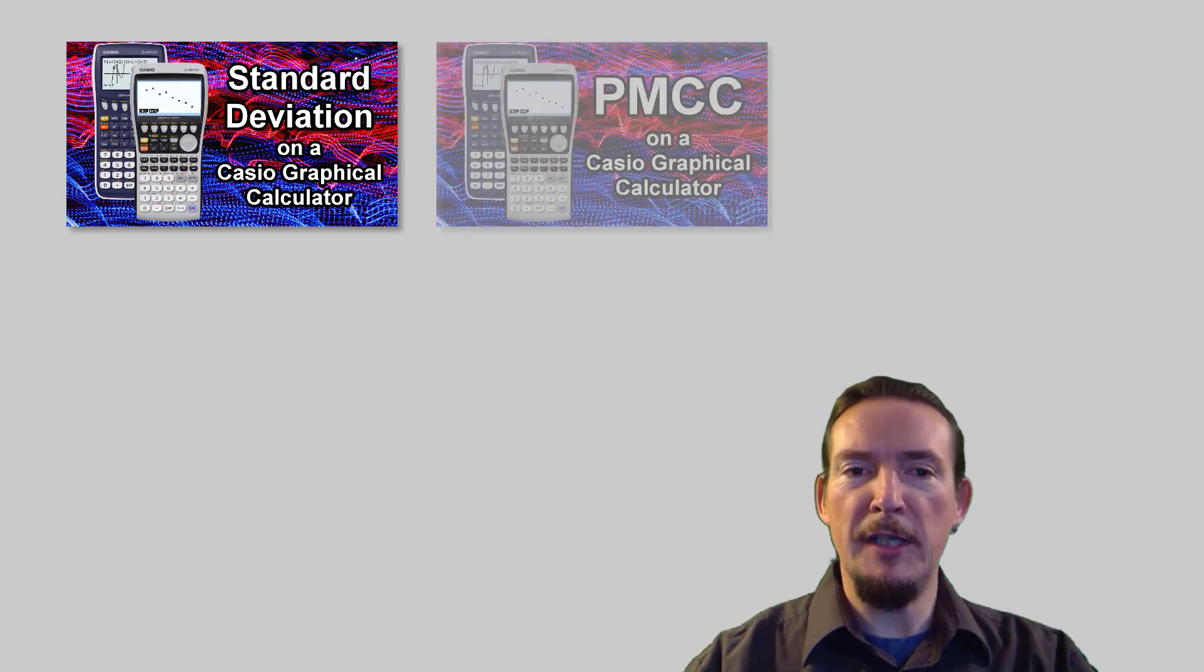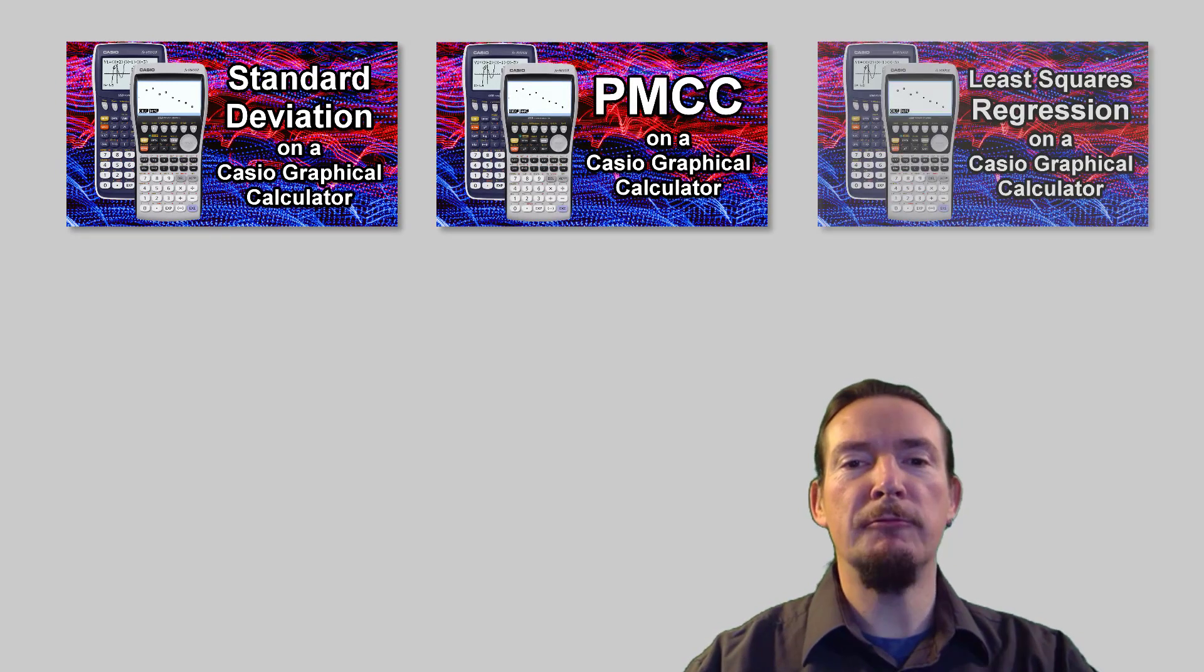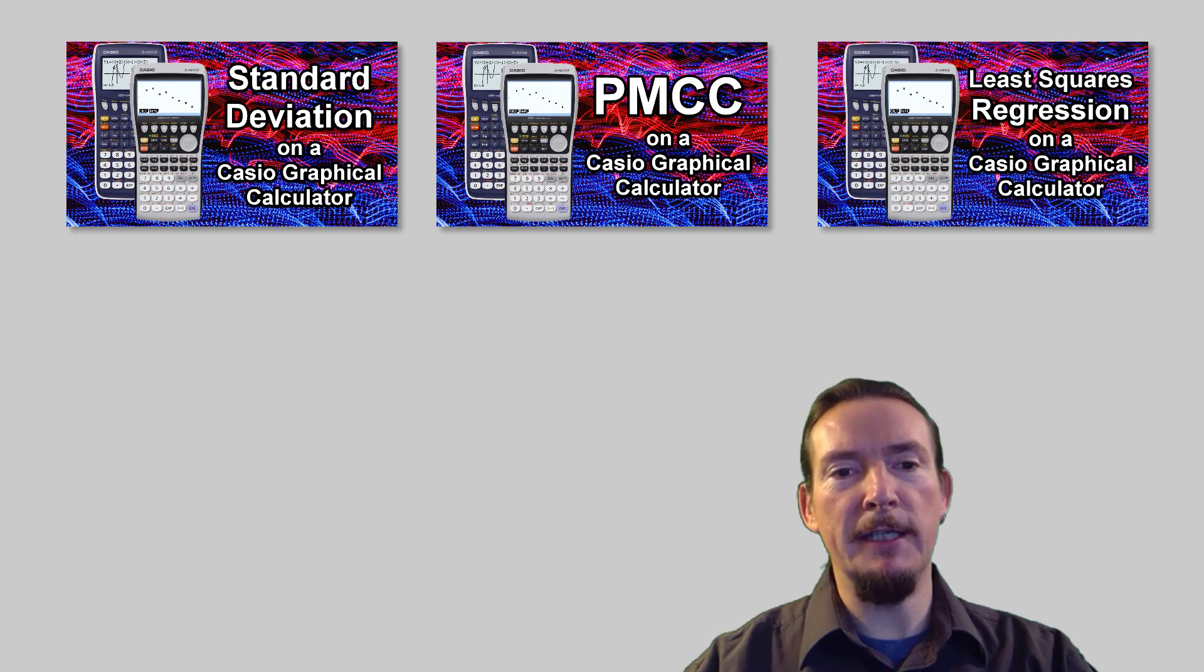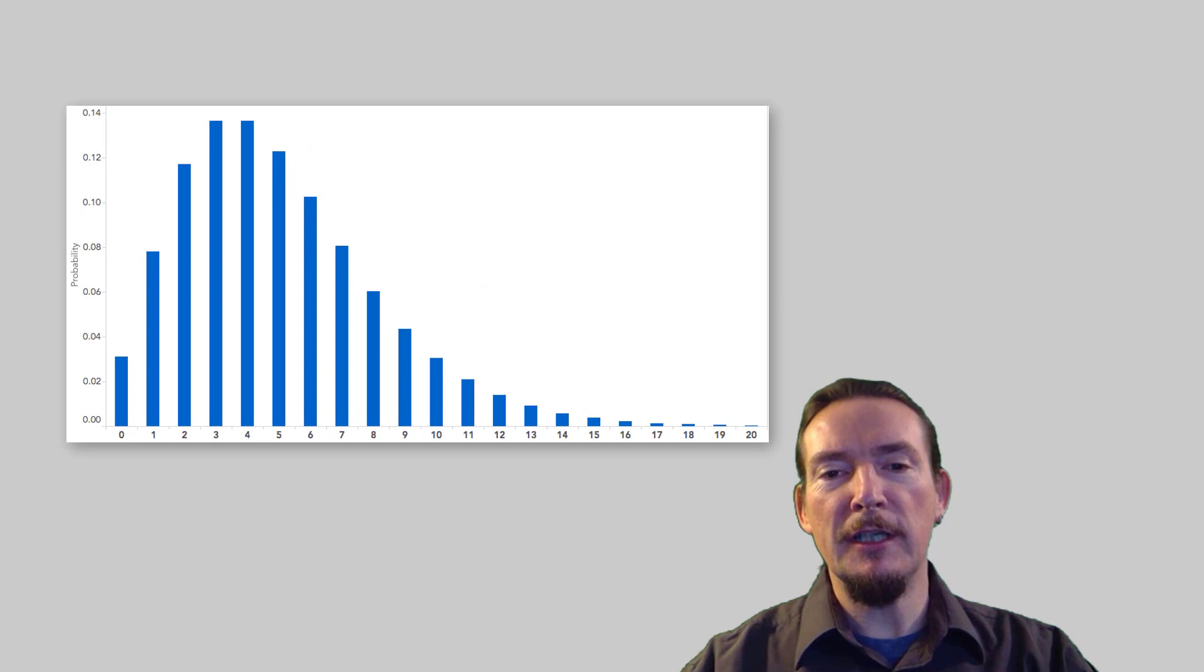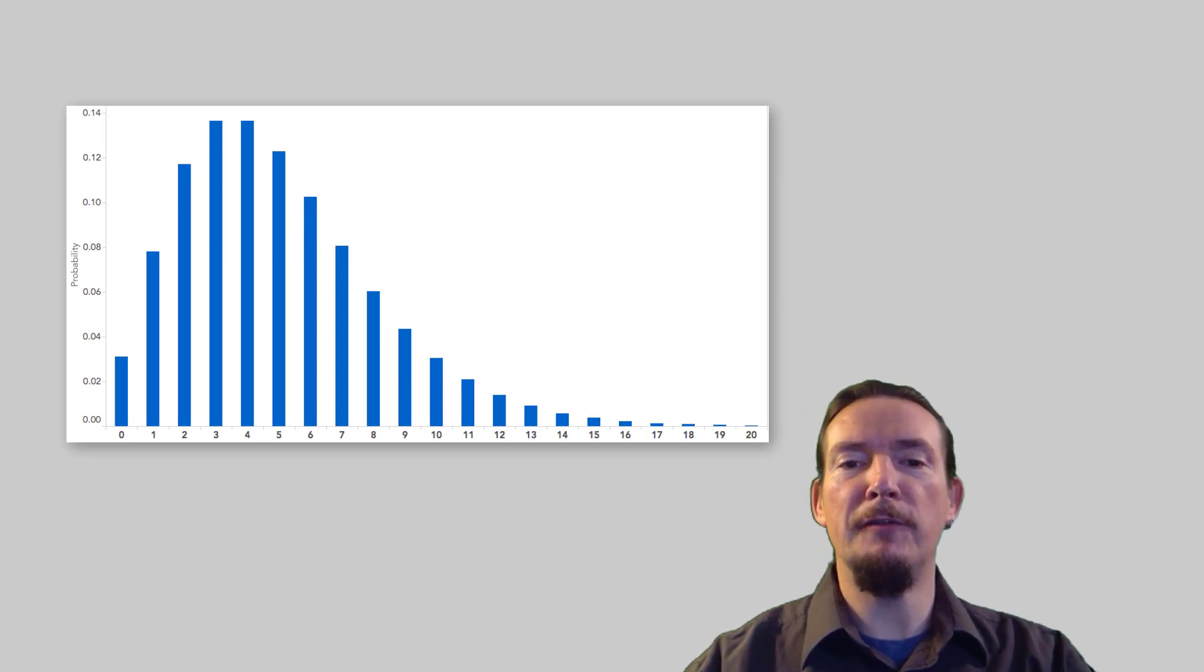In previous videos, we've covered standard deviation, Pearson's PMCC, and least squares regression lines, so enough of the stats already. Time for a bit of probability. Today, we'll be taking a look at the binomial distribution and how we can use the Casio Graphical Calculator to generate both single and cumulative probability values.